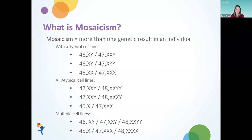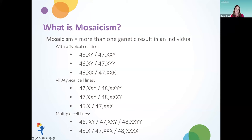So what is mosaicism? My definition of mosaicism is an individual that has more than one genetic result. These results can include a typical cell line — for example, 46XY, which is a typical cell line for a male — as well as some cells showing an extra X chromosome, or 47XXY. You can also see a typical cell line with an extra Y chromosome in some cells, or a typical female cell line of 46XX with some cells having an extra X chromosome. Mosaicism with a typical cell line is thought to be helpful in the sense that the prognosis can be more mild.